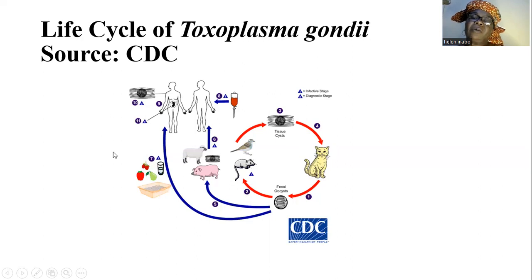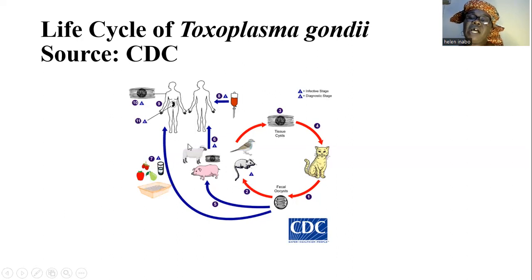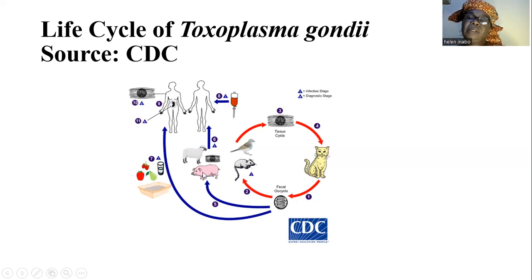The other part of the cycle concerns humans. Humans can become infected with Toxoplasma gondii in four ways. The first is through food animals such as pigs and sheep, which can become infected by ingesting the sporulated oocysts. When the flesh of these animals is eaten raw or undercooked by humans, they become infected.